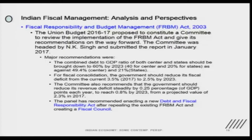It will not be easy to maintain, and I think the FRBM Act for some time will not be in reach of meeting the target. The committee also recommends that the government should reduce its revenue deficit by 0.25 percentage points each year, going from 0.25 percent to 0.80 percent by 2023, which means it requires a whole lot of understanding about how they will be going for expenditure cuts.